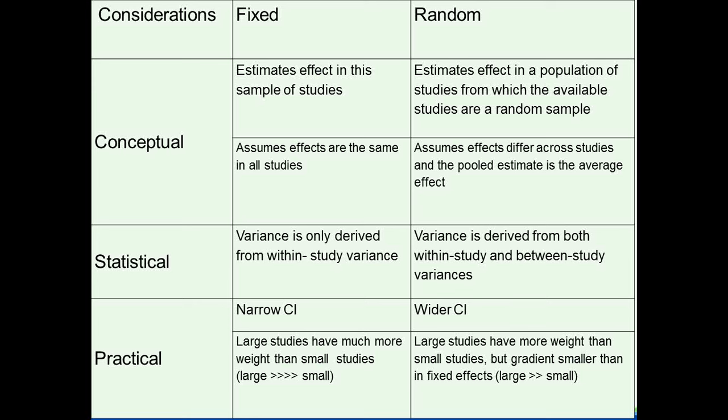When you expect studies to be very similar, you can use the fixed effect. When you expect studies to be somewhat heterogeneous, you use the random effect — a decision made a priori before seeing the data. With the fixed effect, you have a narrower confidence interval; with the random effect, you have a wider confidence interval. In the fixed effect, the weight is simply the inverse of the variance. In the random effect, we add tau-squared — the between-study variance — to the denominator, giving higher weights to studies with low variance while making the confidence interval wider when there are more differences between studies.